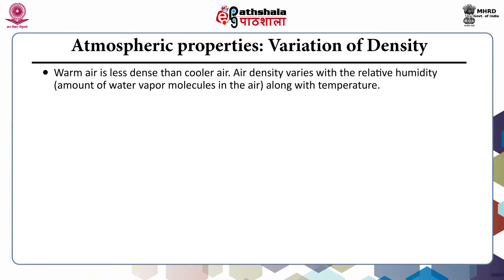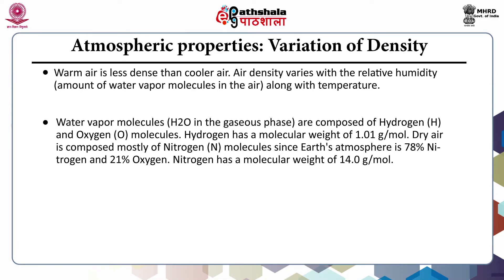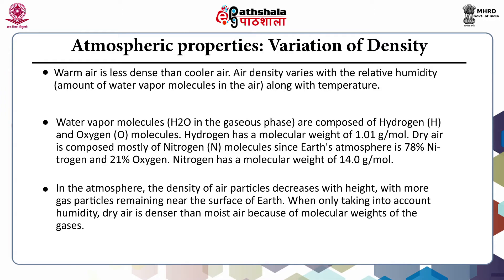Warm air is less dense than cooler air. Air density varies with relative humidity — that is, the amount of water vapor molecules in the air — and along with temperature. Water vapor molecules are composed of hydrogen and oxygen; hydrogen has a molecular weight of 1.01 gram per mole. Dry air is composed mostly of nitrogen (78%) and oxygen (21%), and nitrogen has a molecular weight of 14 gram per mole. In the atmosphere, the density of air particles decreases with height, with more gas particles remaining near the surface. When considering only humidity, dry air is denser than moist air because of the molecular weights of the gases.